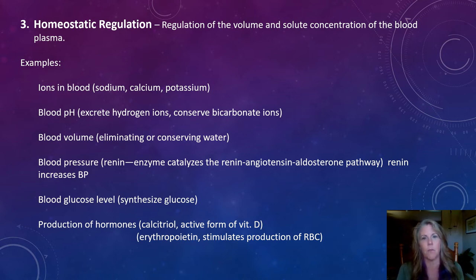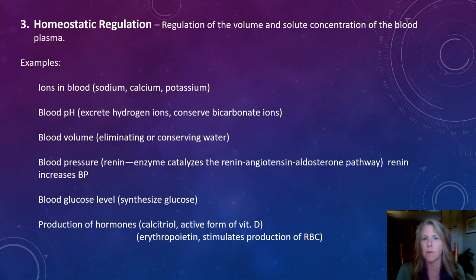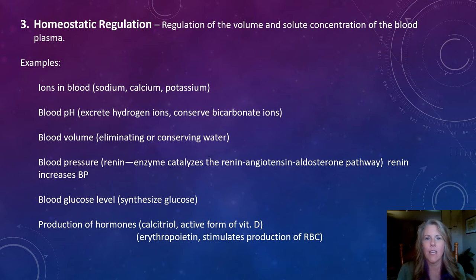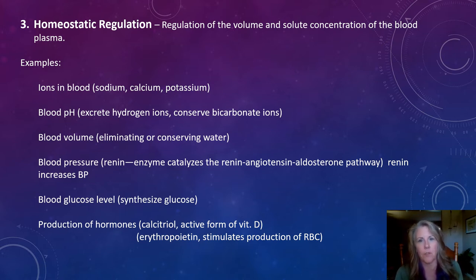Another function is the production of hormones. The kidneys do produce hormones, on a lower level compared to other organs. One example is calcitriol — the active form of vitamin D. We need vitamin D so that it can help calcium cross the border from the small intestine and get into the blood, for intestinal absorption of calcium. Our kidneys can actually help produce some of that.